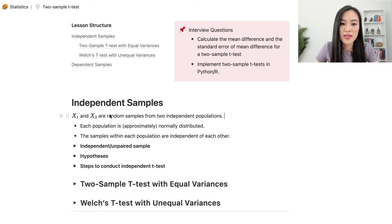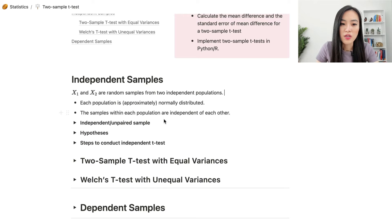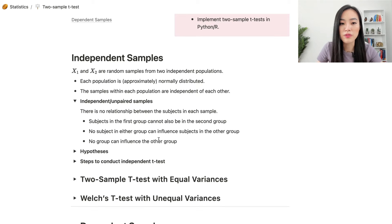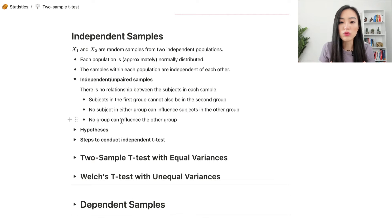Let's start with independent samples. X1 and X2 are random samples from two independent populations, each approximately normally distributed, with samples within each population independent of each other. Independent samples, also called unpaired samples, means there's no relationship between subjects. Subjects in each sample cannot be in the other group, and no subject in either group can influence subjects in the other group.